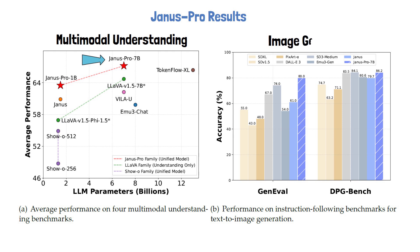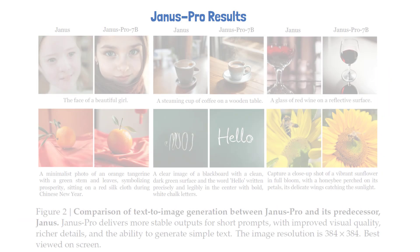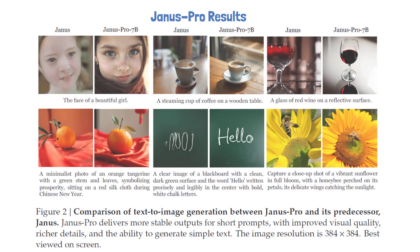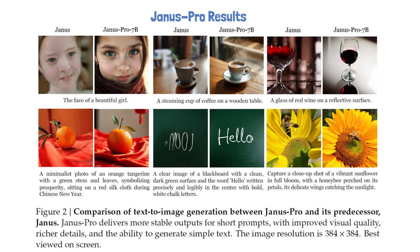The chart on the right shows text-to-image generation results on two benchmarks. Janus Pro outperforms top image generation-only models such as DALL-E 3 and SD3 Medium. It also outperforms the previous state-of-the-art results for image generation of unified models. Finally, comparison examples of text-to-image generations between Janus Pro and its predecessor show a significant improvement in quality.